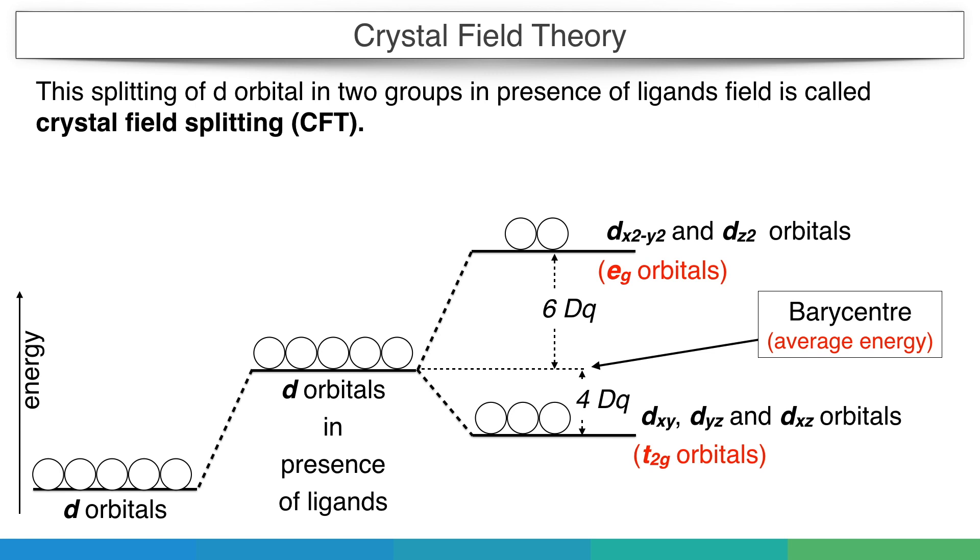Please note that each electron filled in an eg orbital will increase the energy of the molecule, while each electron filled in a t2g orbital will decrease its energy from the barycenter. Therefore, electrons will prefer to be filled in t2g orbitals to make the molecule more stable.